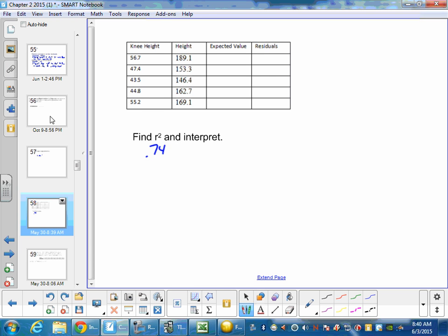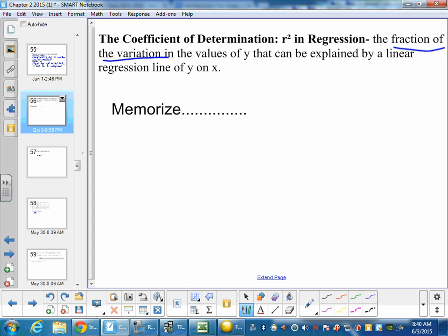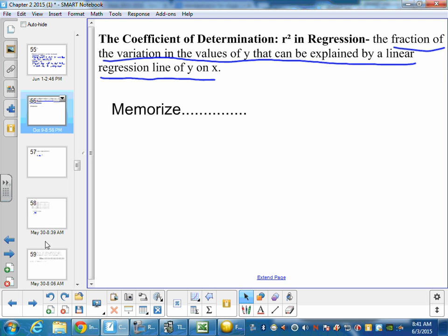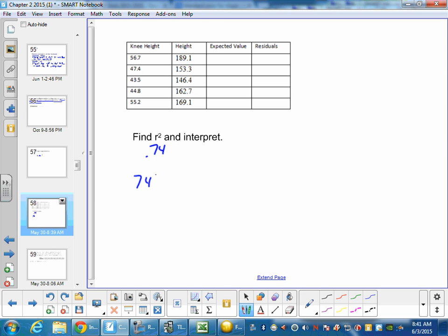Now, interpreting it, we have to go back to the definition, and these words, I say memorize because these are words that we have to know. They're used in code all the time. I hear them on radio, on TV. Sometimes they say the percent of variation, but these words you'll hear. They'll say the percent of the variation of the values of y that can be explained by a linear regression of y on x. Don't try to be much different from that. What we want to say is 74% of the variation in height can be explained by a linear regression with knee height.